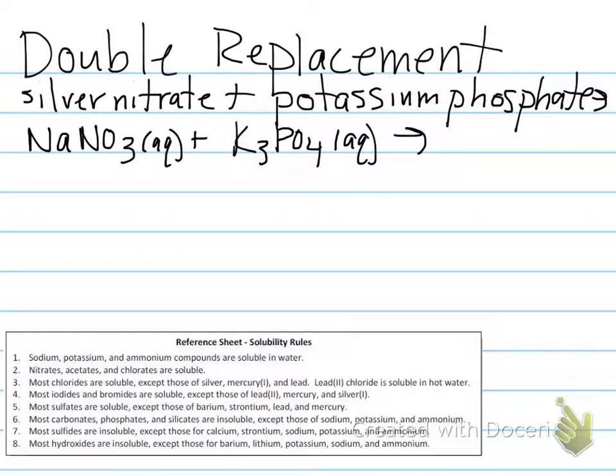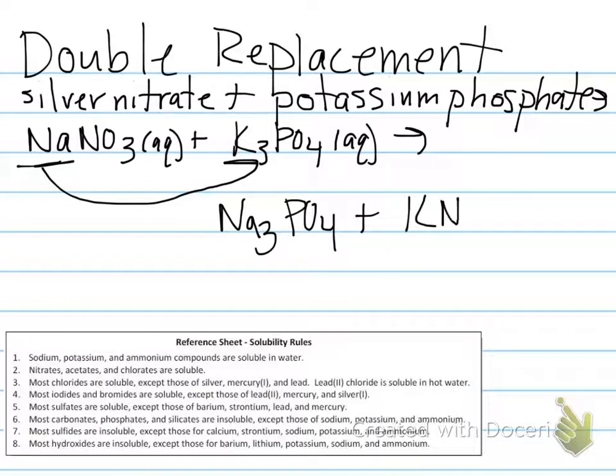So in this case, if the sodium trades places with the potassium, we could end up with sodium phosphate and potassium nitrate. So let's take a look at these rules. I'll show you a little bit about how this would work.